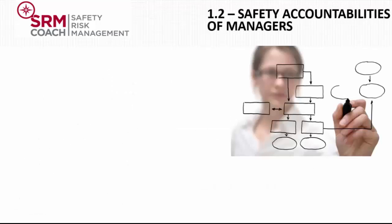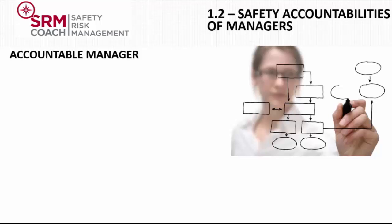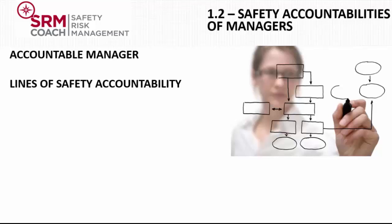The accountable executive has the ultimate responsibility and accountability for the implementation and maintenance of the SMS. Accountability means that you have to explain what you are doing with respect to safety and show results. You will be held responsible if you fail to do what is expected of you. There should also be defined lines of safety accountability for members of the senior management team and all members of management. This means, for instance, that they should have defined in their job description what their safety responsibilities are, and these responsibilities should be communicated throughout the organization.